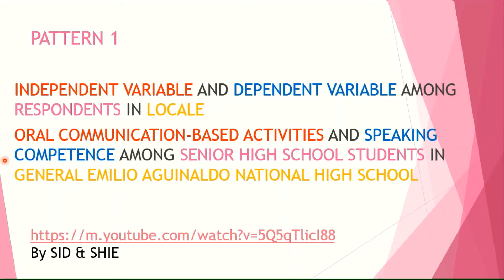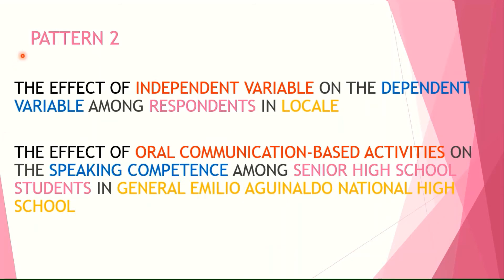If you don't want to follow pattern one, we have pattern two. The title begins with 'The Effect of' + Independent Variable + 'on the' + Dependent Variable + 'among' + Respondents + 'in' + Local. Using the same variables, respondents, and locale, we arrive at the complete title using this pattern. We also have pattern three, the shortest: Dependent Variable + Respondents + Local. This gives us: 'The Speaking Competence of the Senior High School Students in General Emilio Aguinaldo National High School.' Many researchers also add the school year — for example, school year 2020 to 2021.